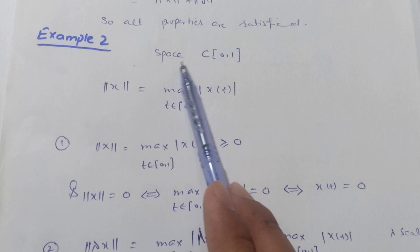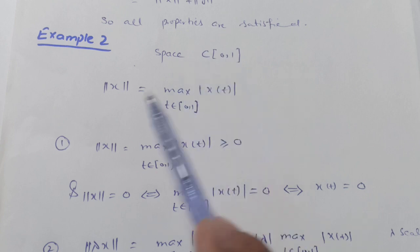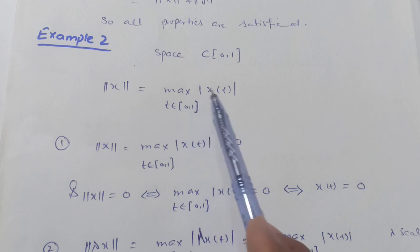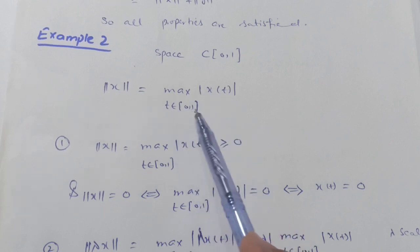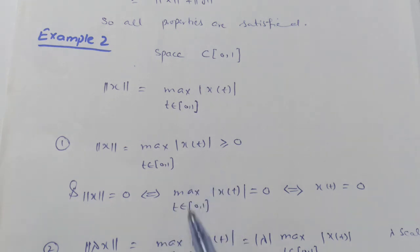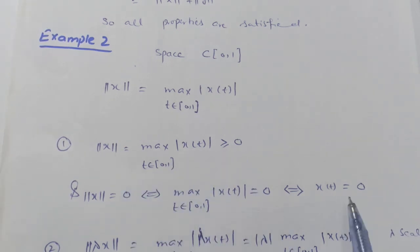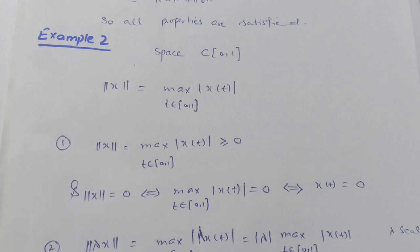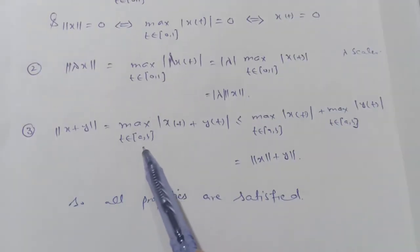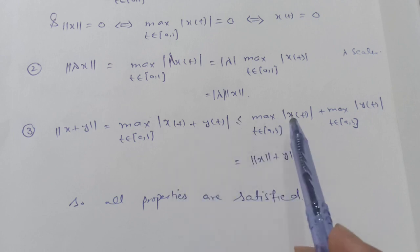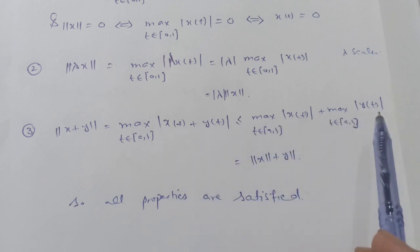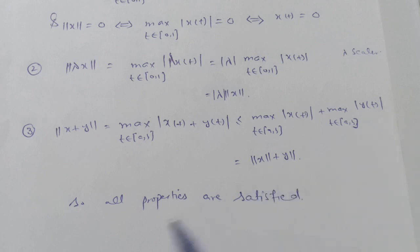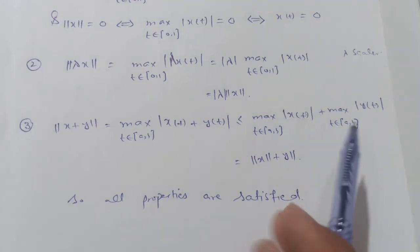For the second example, C[0,1] with ||x|| = max|x(t)| for t ∈ [0,1]: the first and second properties are obvious — the norm is non-negative and equals 0 if and only if x = 0, and ||λx|| = |λ| · ||x||. For the triangle inequality, ||x + y|| = max|x(t) + y(t)| ≤ max(|x(t)| + |y(t)|) ≤ ||x|| + ||y||. All properties are satisfied.